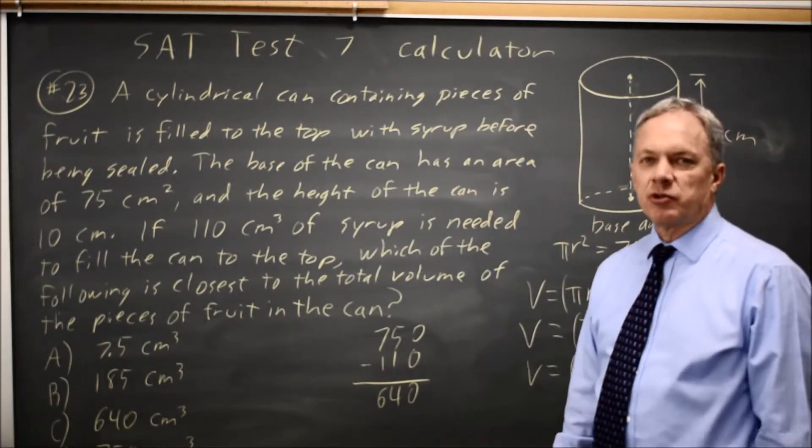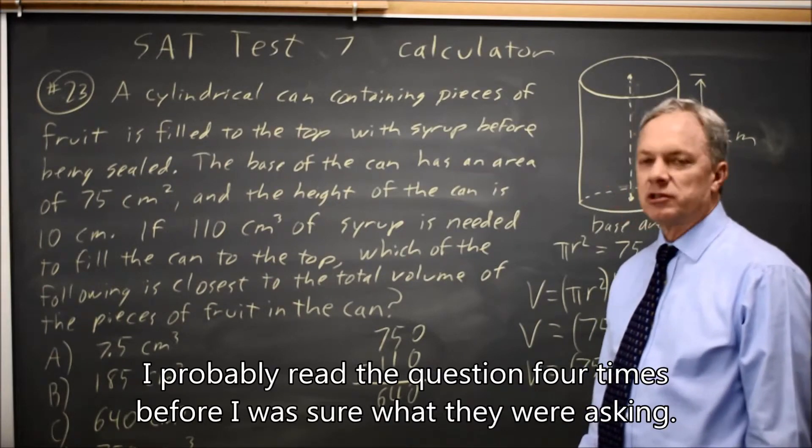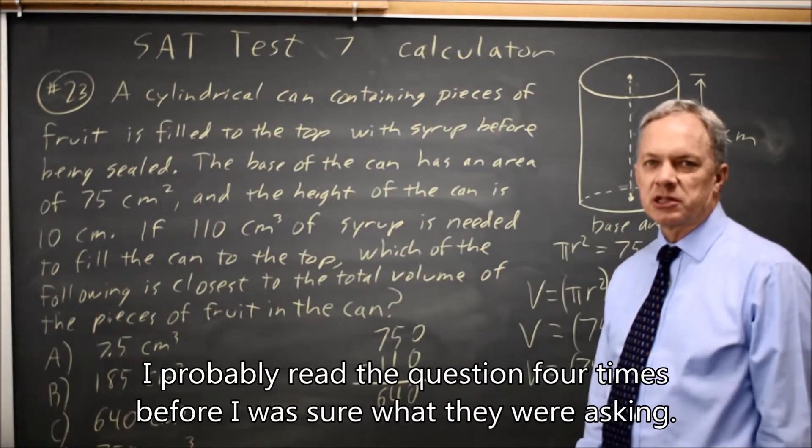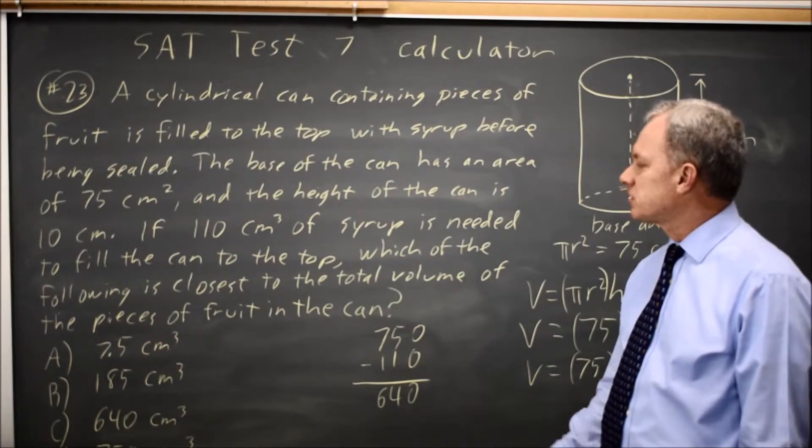We may have to read it once or twice to figure out that the volume of the fruit plus the volume of the syrup equals the entire volume of the can, but that does make sense.